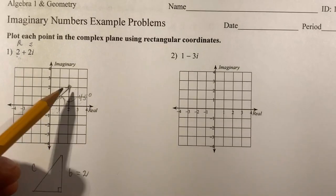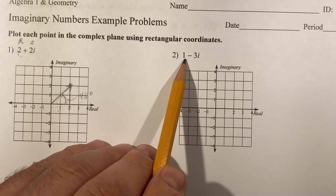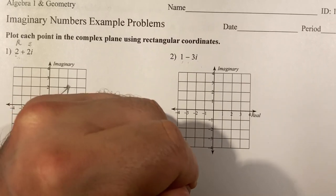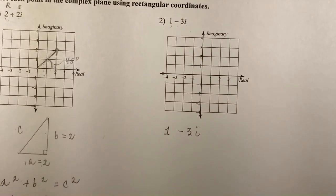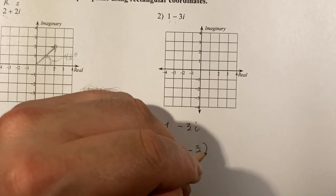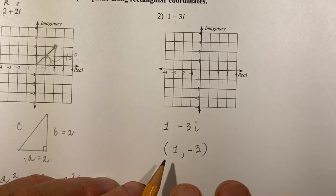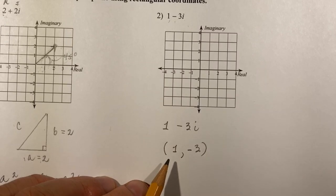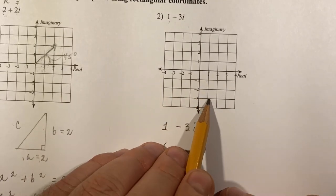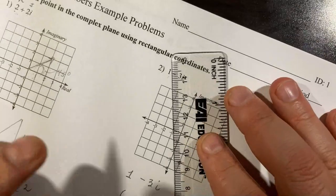So there was a lot more going on than just plotting the points. Let's plot the points for number 2. That's 1 minus 3i, and so we separate these out. You can write a coordinate system: 1 comma negative 3. Just by looking at this, it's positive on the horizontal and negative on the vertical, and that's going to put you in quadrant 4. So you're going to go over 1 and down 3.